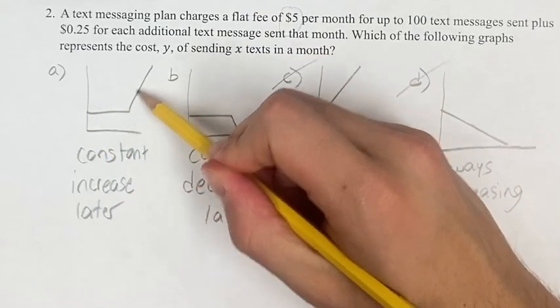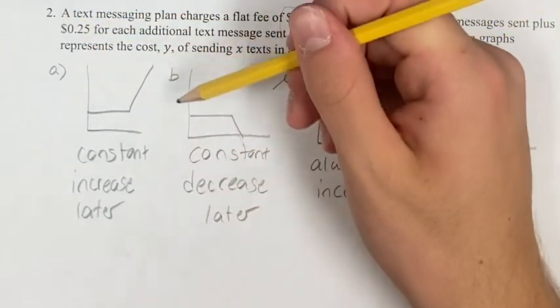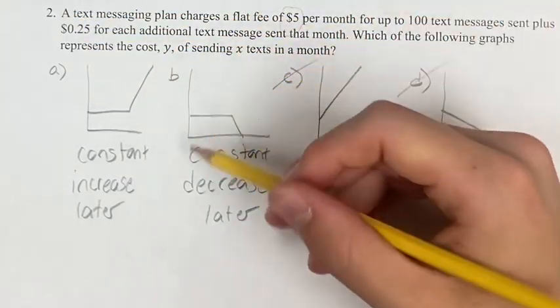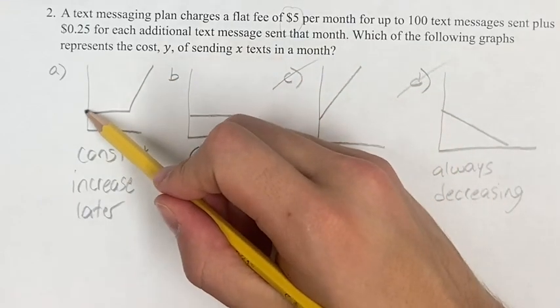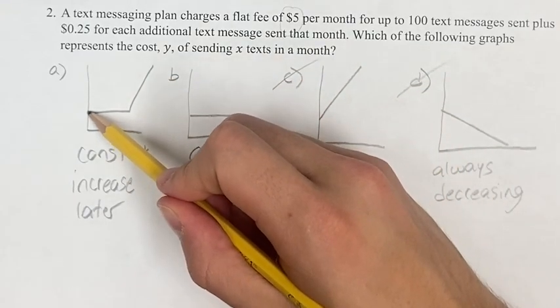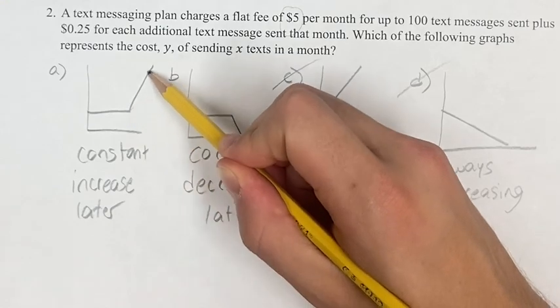So then after that, does the price go up or down? We're told it's an additional 25 cents for every text message sent after that. So it starts at $5 for the first hundred messages, and then after that you have to start paying more so the price goes up.